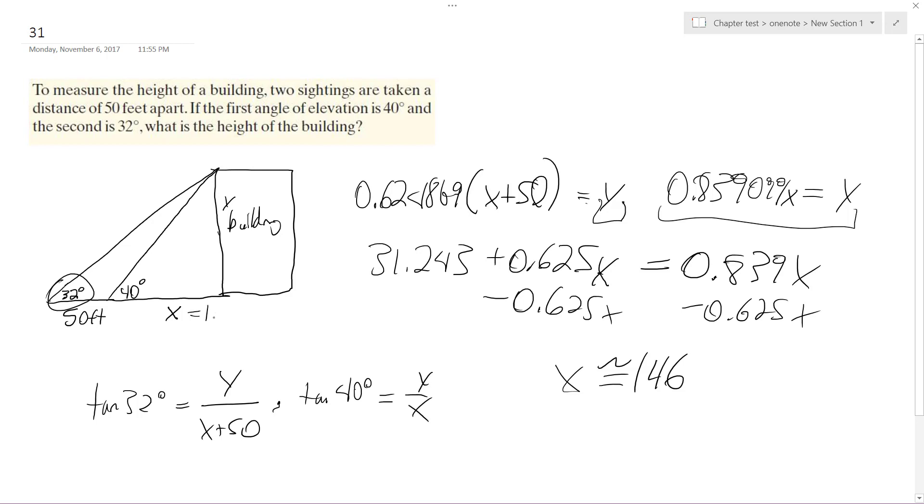Alright, so x is equal to 146. Because I have that, now I can solve for y. So sine, or actually, it's still tangent. Oops. So tangent of 40 degrees is going to be equal to y over 146.